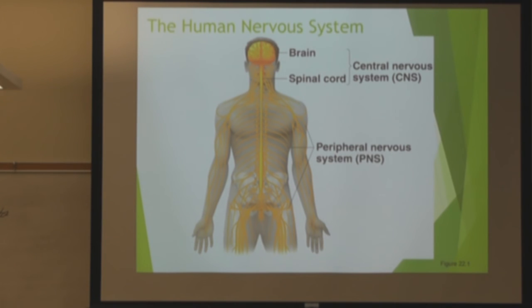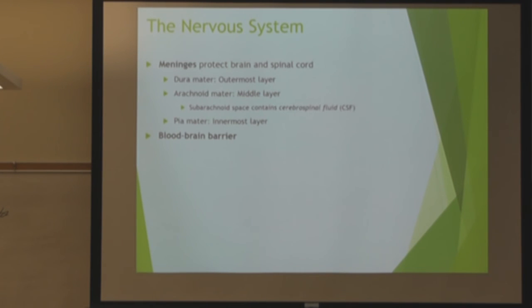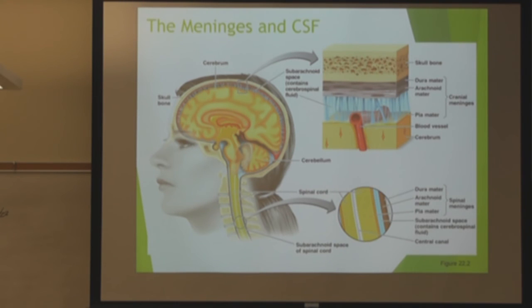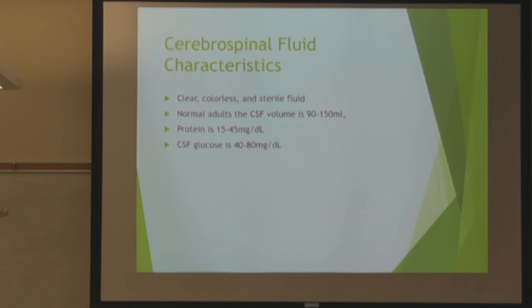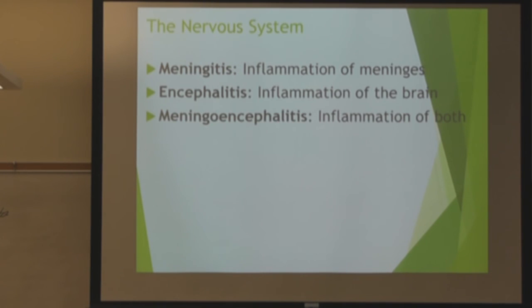Moving to objectives for the nervous system — CNS covers the brain, spinal cord, and cranial nerves, but not peripheral nerves. Meninges and CSF should be a review. For CSF, you need to know the normal characteristics — protein, glucose, and the specific numbers — as there will definitely be test questions on that. Straight-up definitions: meningitis, encephalitis, or you can have inflammation of both, which is really bad news.